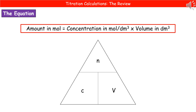In order to do that, we need to remember the formula, which is: the amount in moles is the concentration in moles per decimetre cubed times by the volume in decimetres cubed. If you prefer to remember triangles, then I've given you one there. N is the amount in moles, C the concentration, and V is the volume.